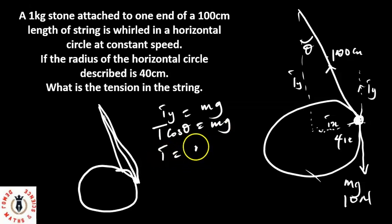So that T is equal to mg over cos θ. Now the first thing we should be looking for is the cos of θ.